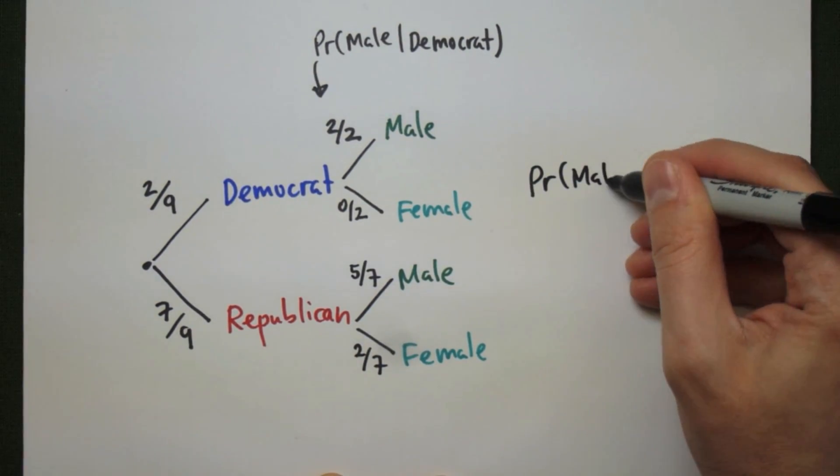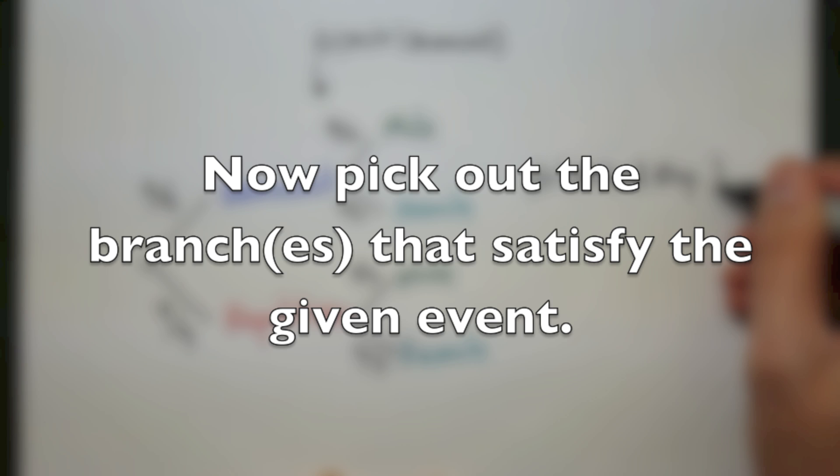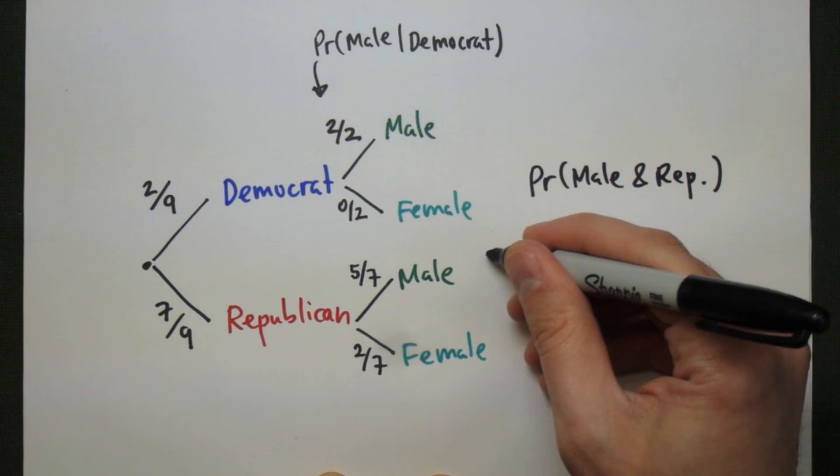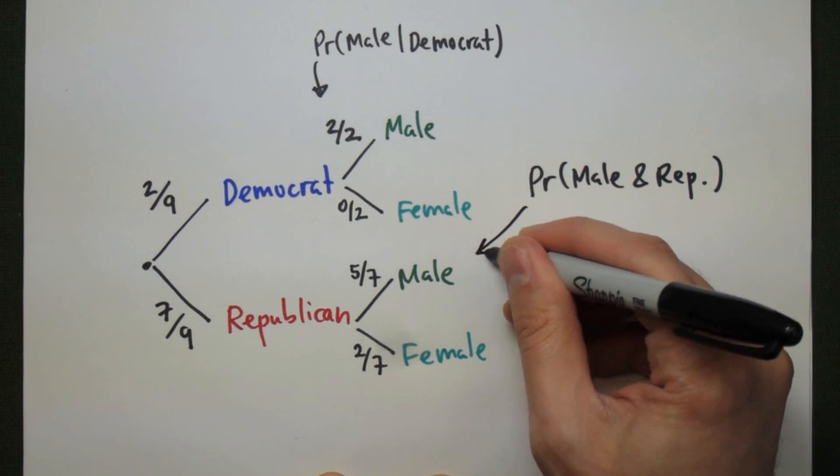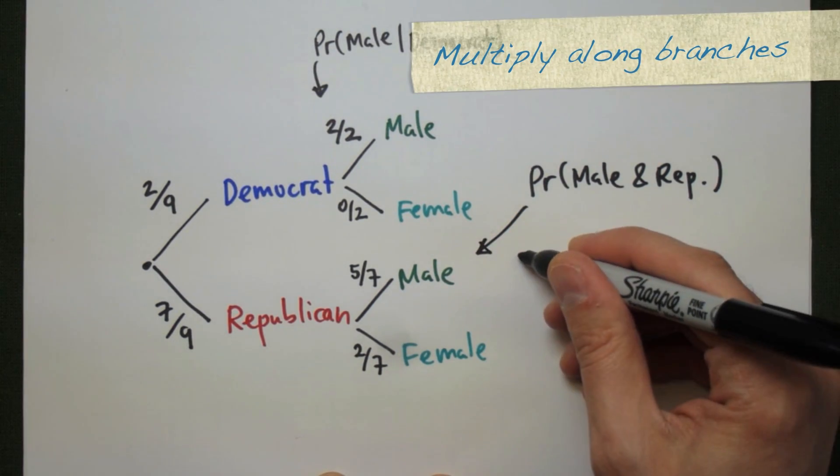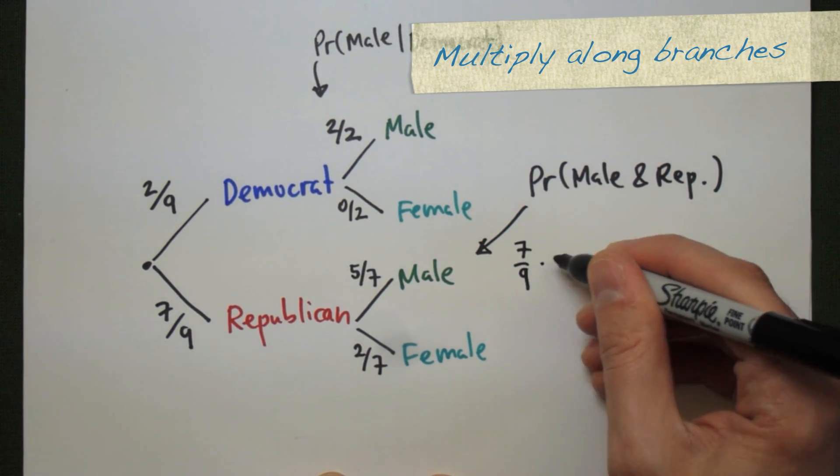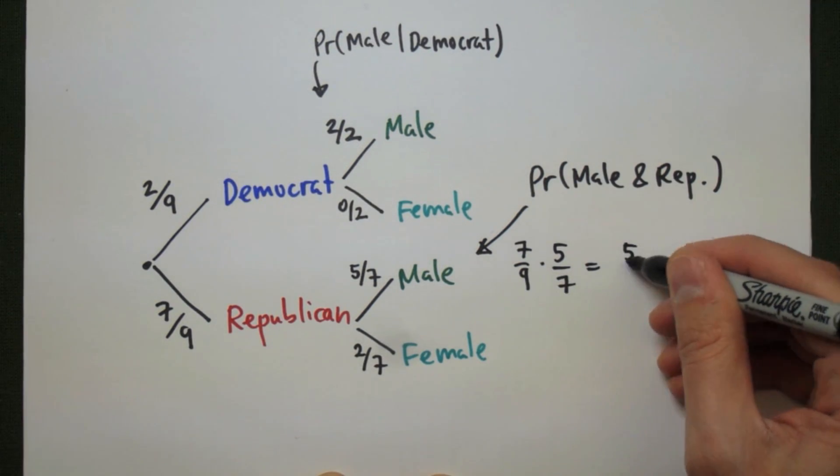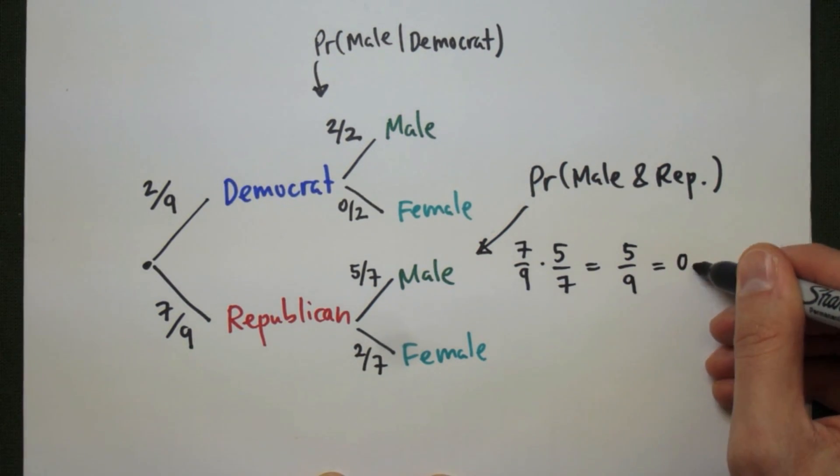To find the probability we were looking for now, male and Republican, we're going to multiply along the branches that satisfy the given event. In this case, there's exactly one branch that works for us: the Republican branch followed by the male branch. So we multiply along those branches. That's just the multiplication principle. And we get seven-ninths times five-sevenths, or just five-ninths, which is 0.556.